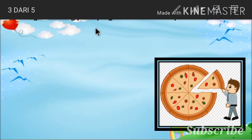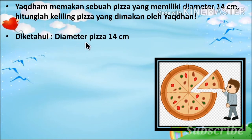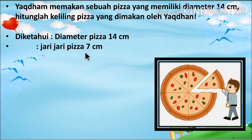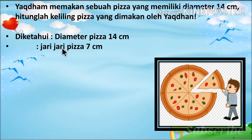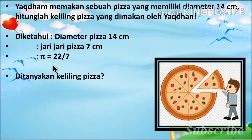Diketahuinya adalah diameter pizza berukuran 14 cm. Kemudian jari-jari pizza adalah 7 cm, karena setengah dari 14 adalah 7. Jadi jari-jari pizzanya adalah 7 cm. Karena jari-jarinya 7 cm, maka nilai π yang digunakan adalah 22/7. Yang ditanyakan adalah berapakah keliling pizza?